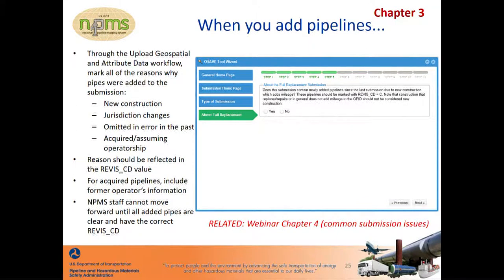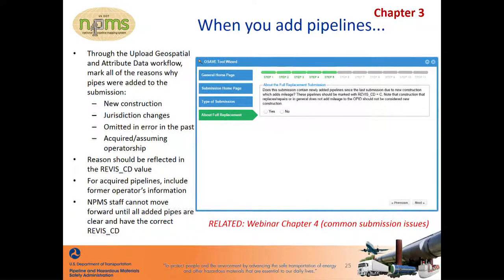You may wonder why we ask you for information about pipelines that are divested or acquired when you are required to submit a type B, D, or E notification to FEMSA. We gather this information from you because these notifications are not always submitted as required. Additionally, in some cases, the description of the impacted pipelines entered into the notification are not specific enough for NPMS staff to confidently identify the pipelines within the NPMS data to make the appropriate actions during processing. For additional information about rules and tips when adding new pipelines to the NPMS data, you may refer to Chapter 4 of this webinar series, which discusses issues commonly found in submissions.